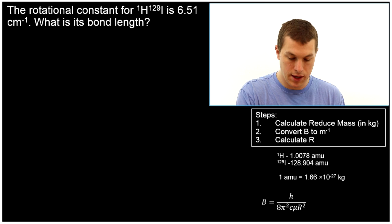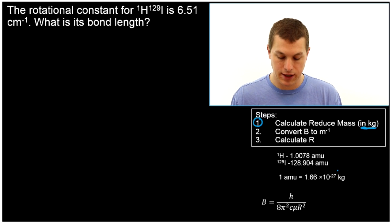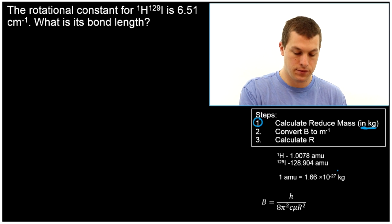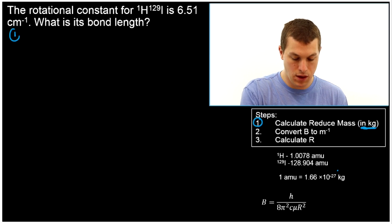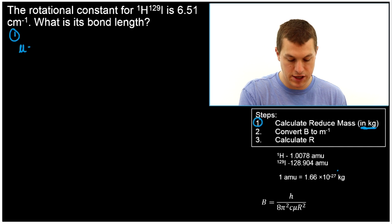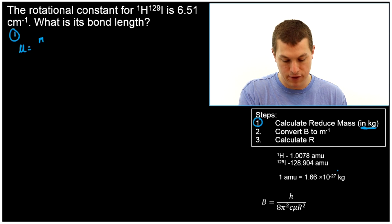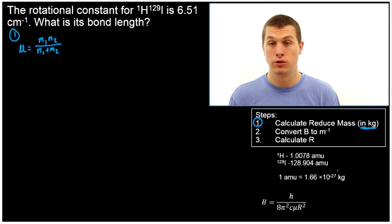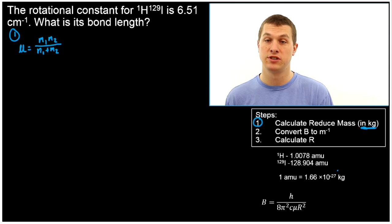So first of all, step one is calculate the reduced mass. And we want that particularly in kilograms. Now, how do we calculate reduced mass? Well, reduced mass, which is symbolized with μ, is equal to mass 1 times mass 2 divided by mass 1 plus mass 2. And that's going to give us our reduced mass. Again, this is just a trick to treat our two separate masses as one.